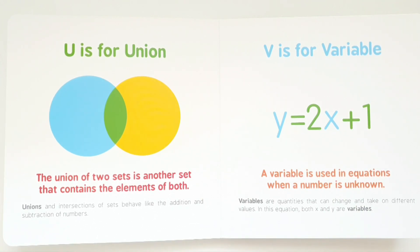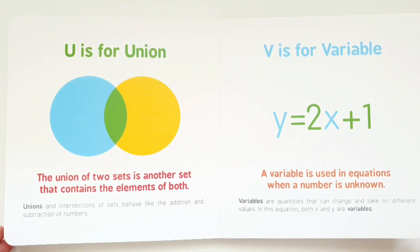V is for variable. A variable is used in equations when a number is unknown. Variables are quantities that can change and take on different values. In this equation, both x and y are variables.